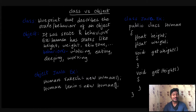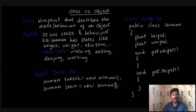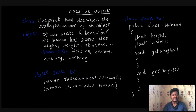Class and object are an important part of object-oriented programming. So, what is the class?